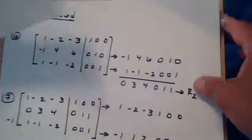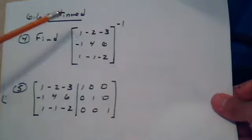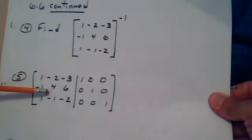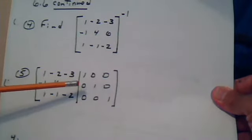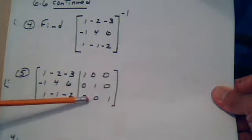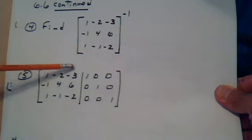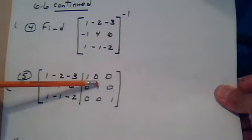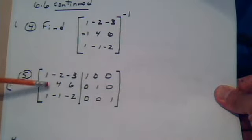We're going to use row operations to find the inverse of this matrix. We write the matrix in augmented form — copy it, put a vertical bar, then put its matching identity matrix. The identity always has ones along the main diagonal and zeros on the off-diagonal elements. Using row operations, we're going to transform the left side into the identity, and then the right side will become the inverse.